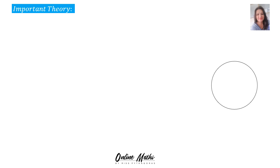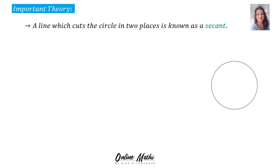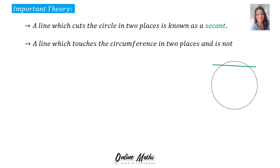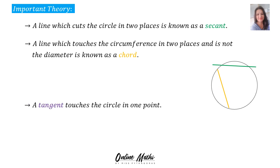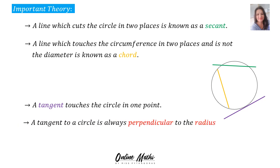Important theory. A line which cuts the circle in two places is known as a secant. A line which touches the circumference in two places and is not the diameter is known as a chord. A tangent touches the circle in one point.